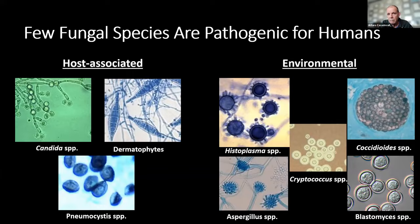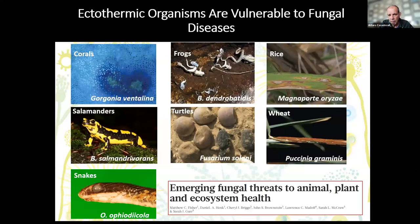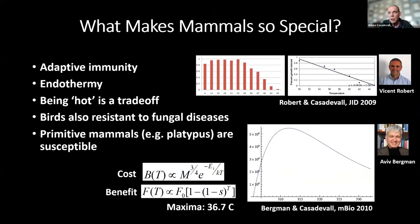By contrast, fungi are devastating entire ecosystems — and the one thing those ecosystems often have in common is that they are room temperature; those organisms don't regulate their temperature. So what makes us so special? Why are we so resistant to fungal diseases? We have adaptive immunity — B cells, T cells, innate immunity. But frogs have it too, and yet they have been decimated. What makes us different from the frogs is that we are warm-blooded.